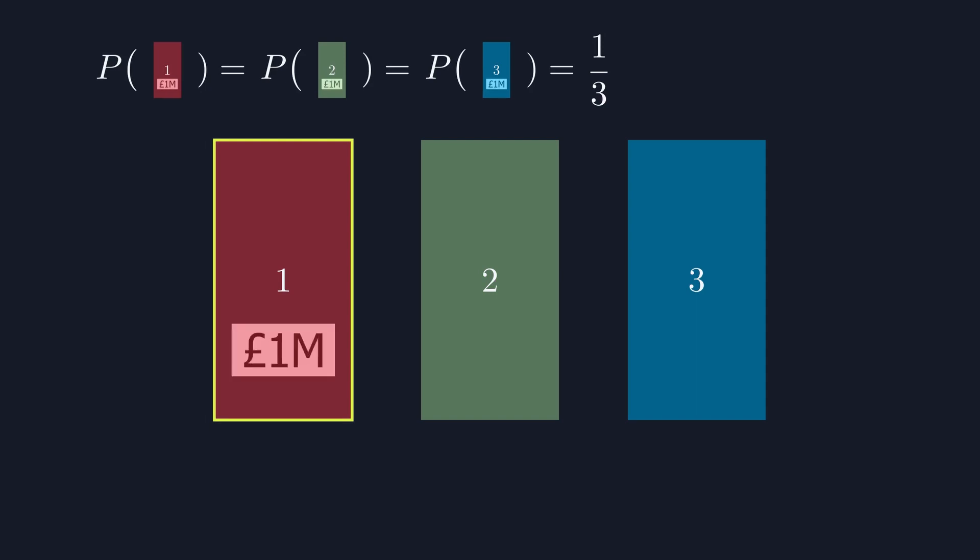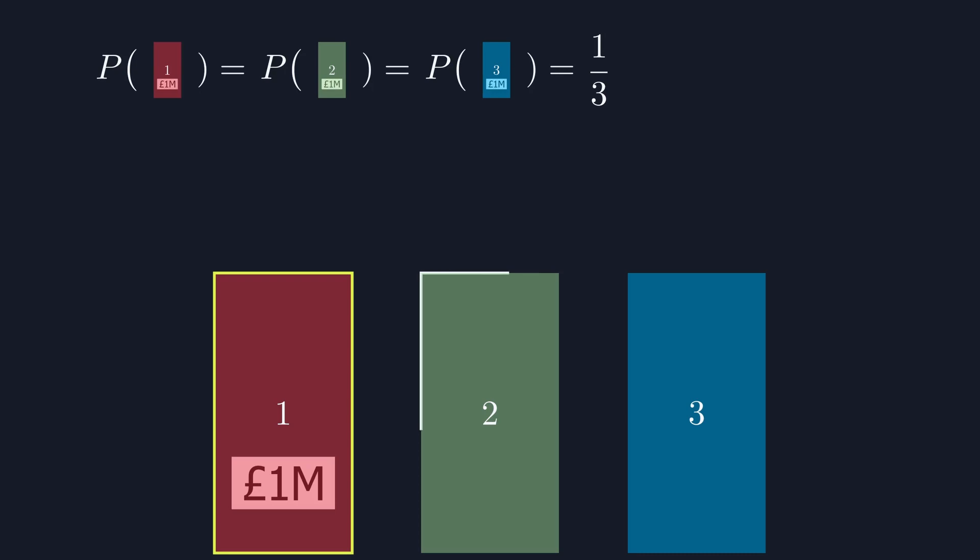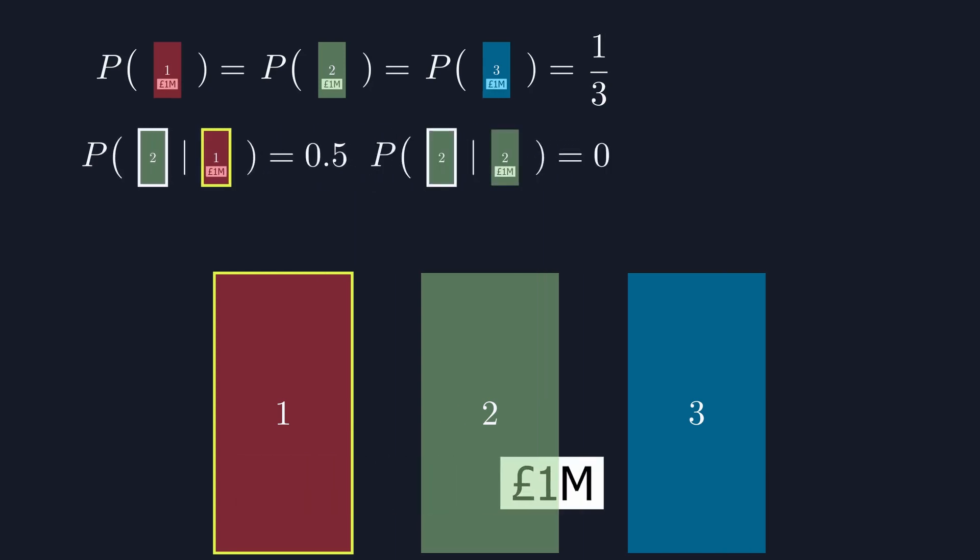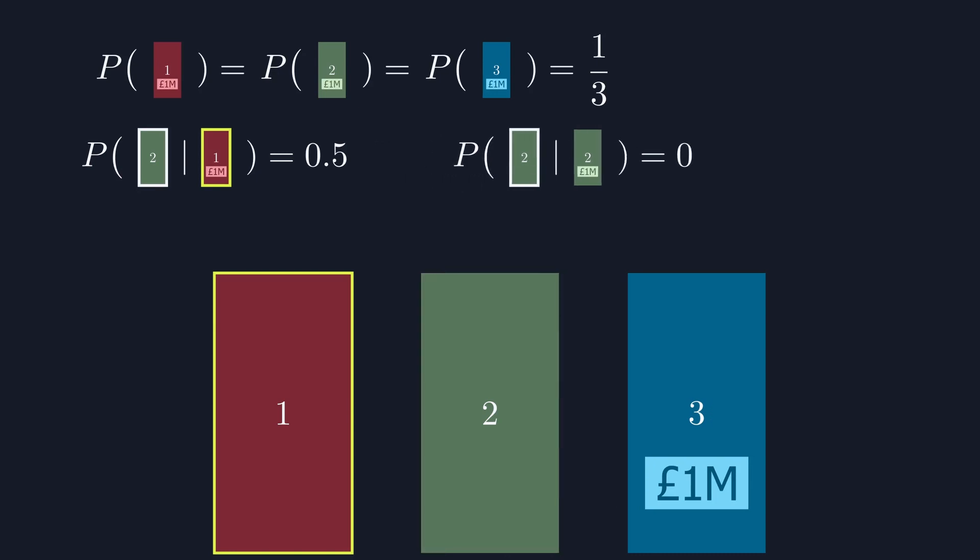If the money is behind door one, there's a one in two chance of the host opening door two, and a one in two chance of them opening door three. If the money's behind door two, the probability of the host opening that door is zero. If the money's behind door three, the probability of the host opening door two is one.